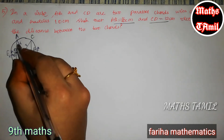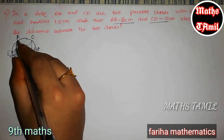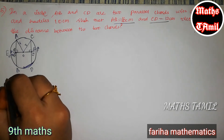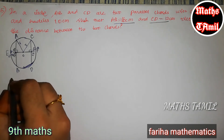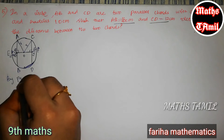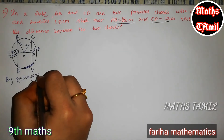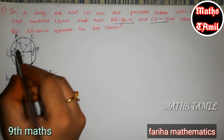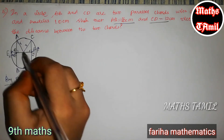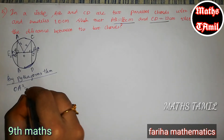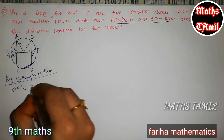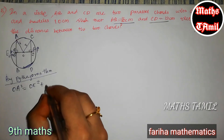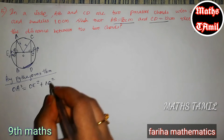If we look at the right angle, we will find the portion using the Pythagoras formula. By Pythagoras theorem, OA squared equals OE squared plus AE squared. This OA is the hypotenuse.